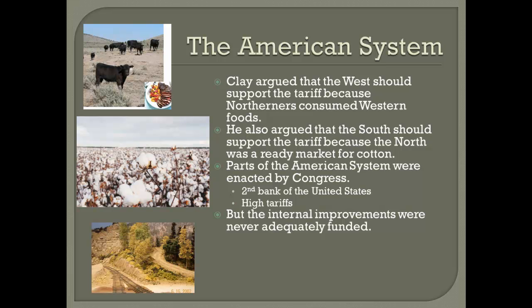What didn't happen was the internal improvements. There was never quite enough money — they never quite got the appropriations from Congress to effectively complete the entire road system that Henry Clay had envisioned. Yes, roads, canals, and railroads were built, but a lot of the money came from the states or from private investors, which was not what the original plan was.